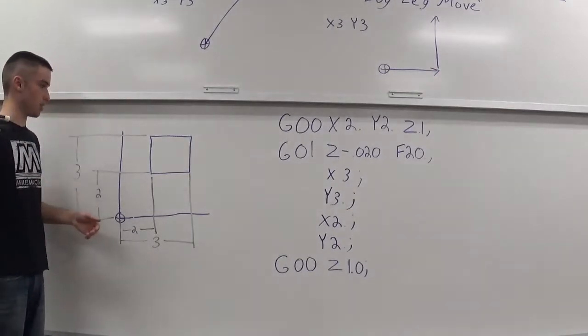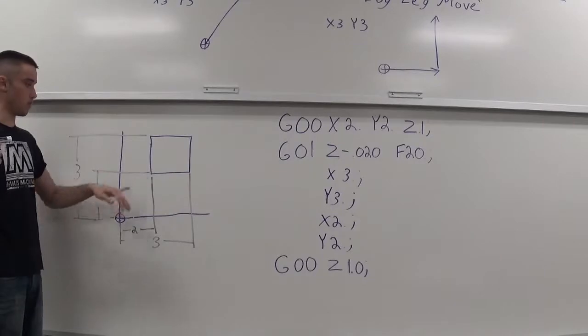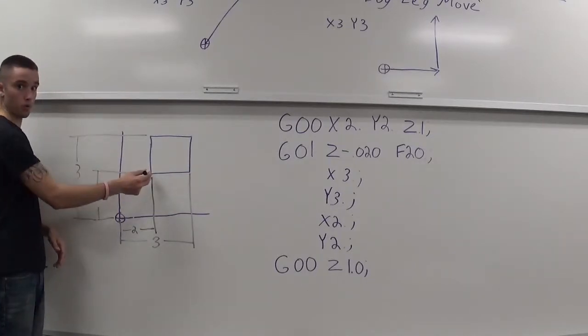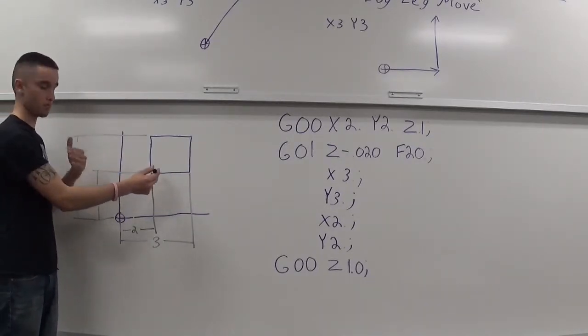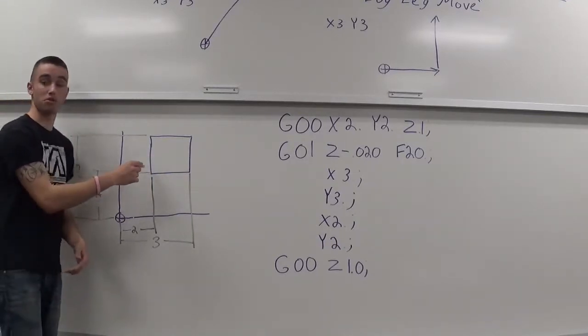The z of 0.1 means I'm 100,000 above my work piece. I am at machine home, x of 2, y of 2, and a z of 0.1. So, I wrap it down quickly. I'm not actually into the work piece yet. The tools are sitting above the work piece, ready to do some milling.